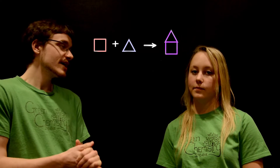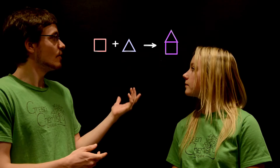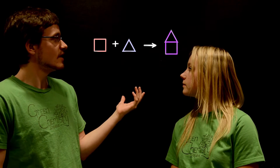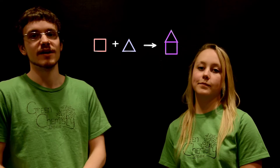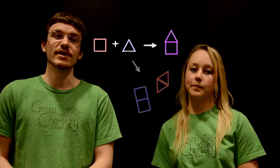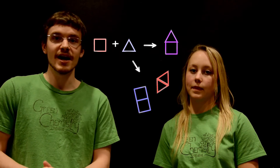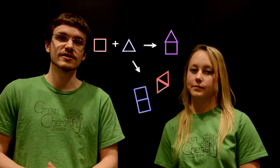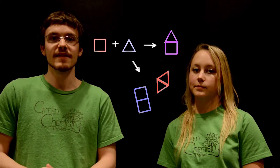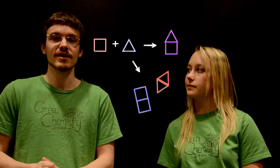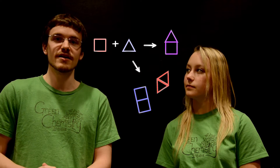In an ideal reaction each square only reacts with a triangle to form the final product. But in reality a variety of other byproducts are also formed, and these have to be separated from the final product. Many methods of separation require the use of a large amount of solvent.